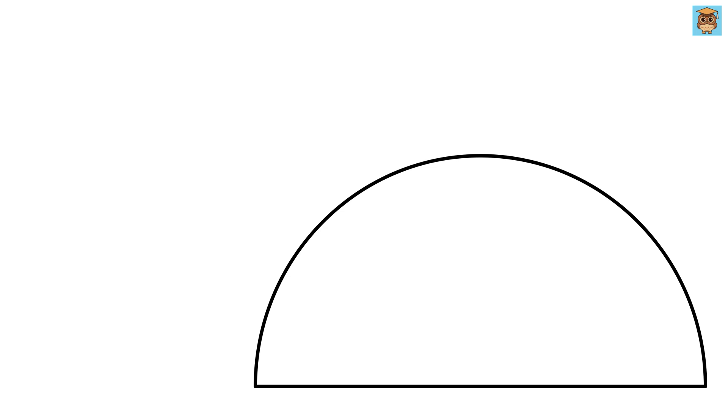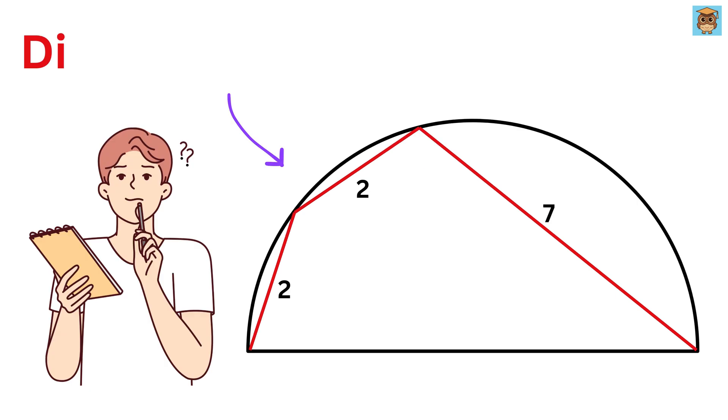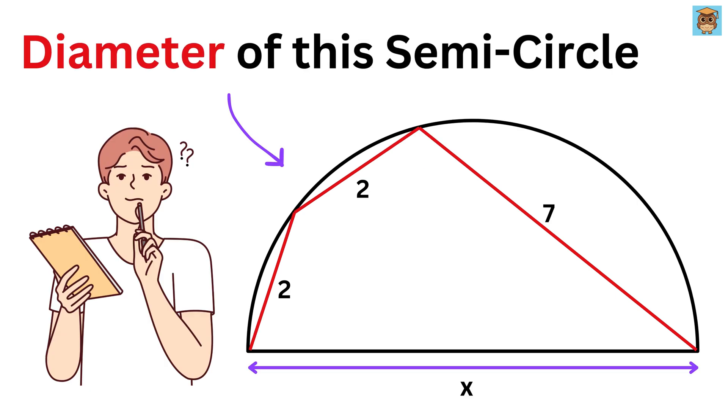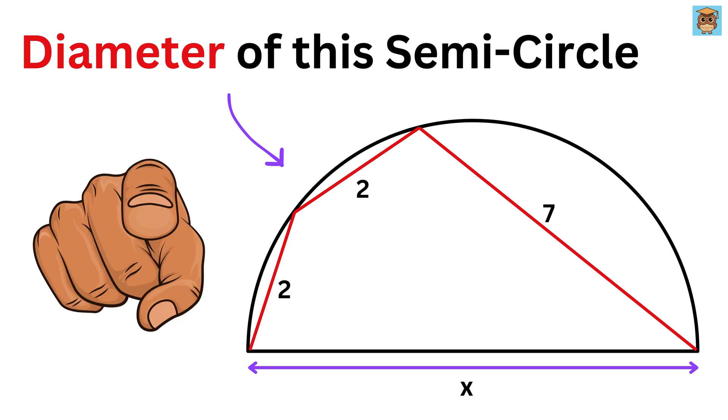We have a semicircle. Then we have the length of this piece as 2. This is also 2, and this length is 7. Our job is to find the diameter of this semicircle, or this X. So, can you solve it?